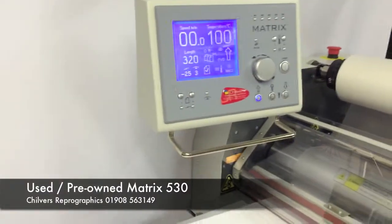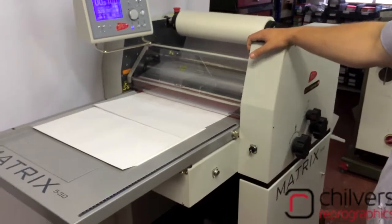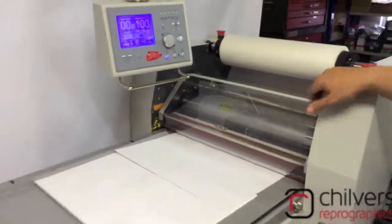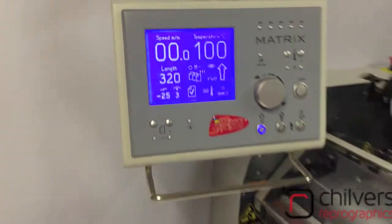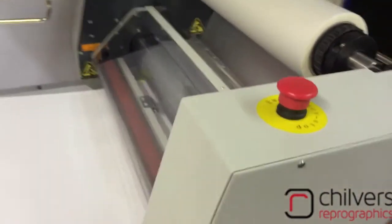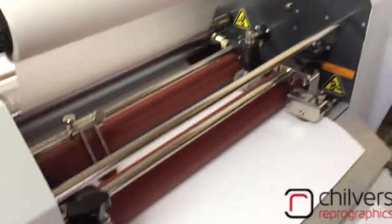This Priome Matrix 530 single-sided laminator is in brilliant condition. It's a 2013 model with heads-up display and semi-automatic feed. Key features include two key guillotine edges, so the speed of production is ideal for any printer.